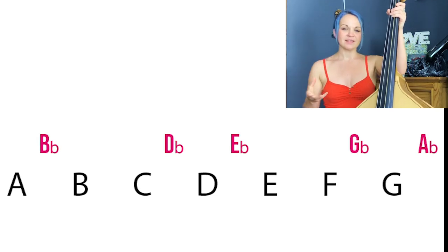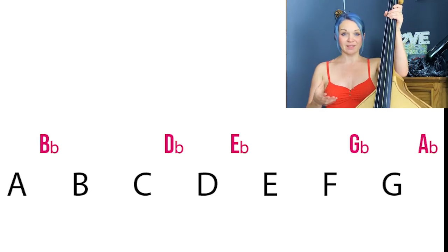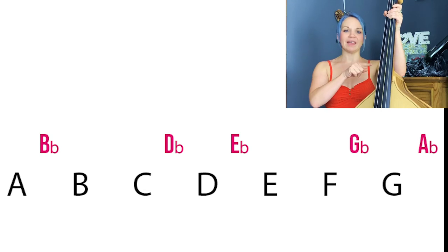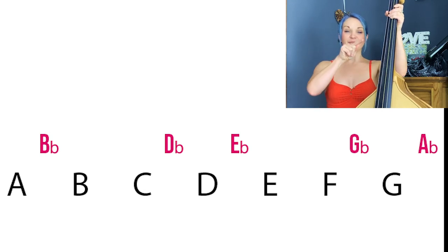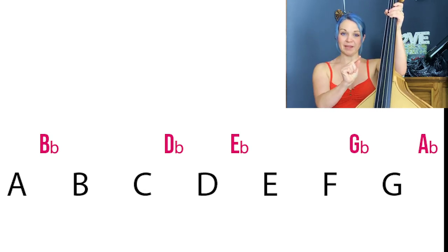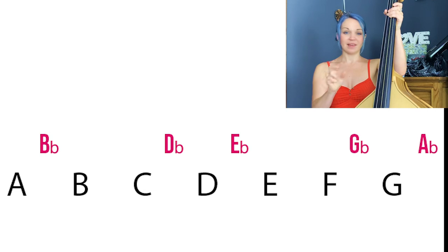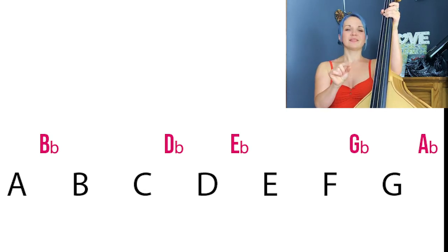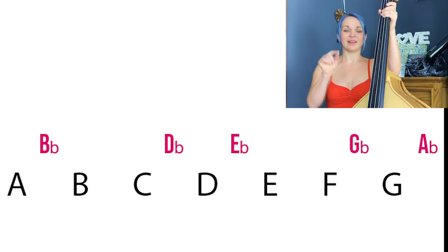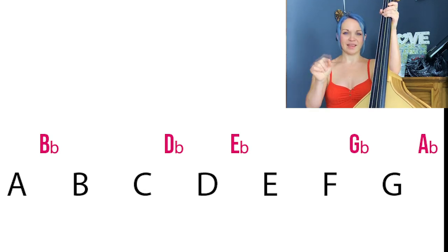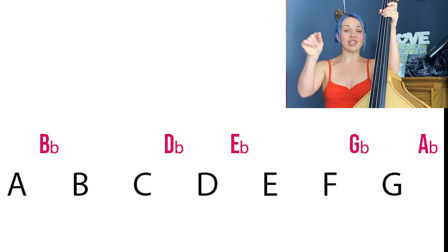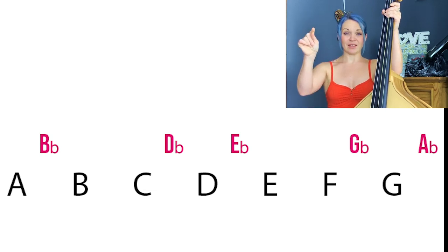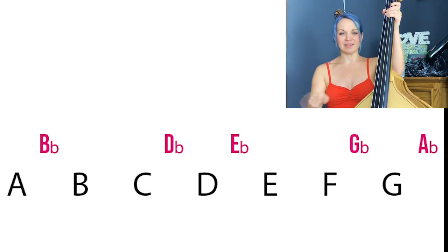If we look at that same sequence using the flat concept, you would have A, B flat — because it's just below the B — B, C. Again, there is never a note between the B and the C; they are right next to each other. Then C, D flat, D, E flat, E, F, G flat, G, A flat, and then back to A again.